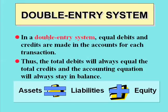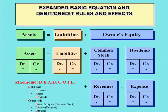We always do double-entry accounting, so our debits have to equal our credits for every transaction. Kind of like when we do an initial analysis and need to keep the accounting equation in balance — one way we do that is to ensure our debits equal our credits.